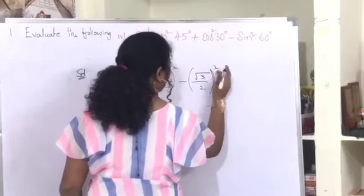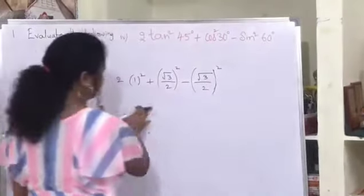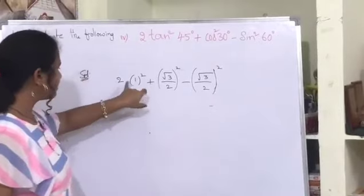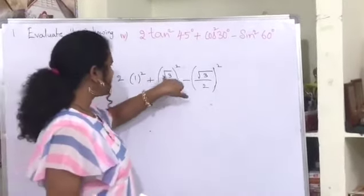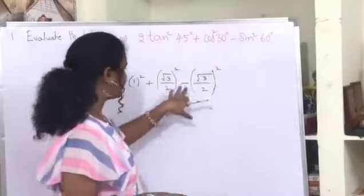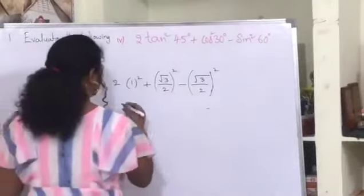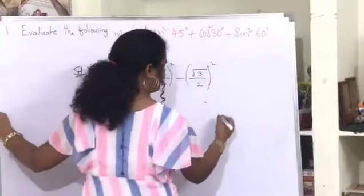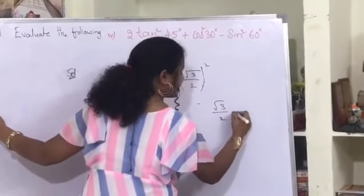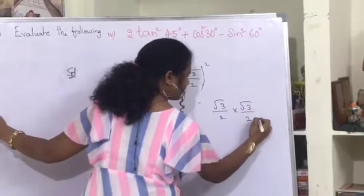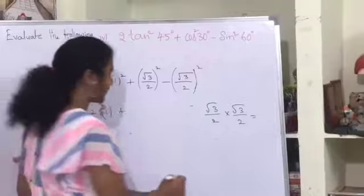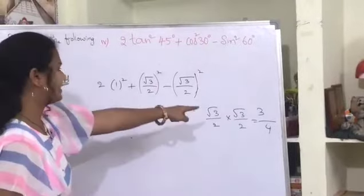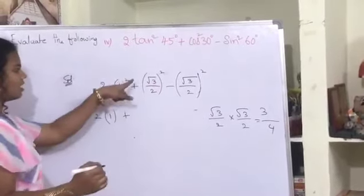Simplifying: 2 times 1 squared equals 2, plus root 3 by 2 whole squared. Now root 3 by 2 into root 3 by 2 gives: root 3 times root 3 equals 3, and 2 times 2 equals 4, so root 3 by 2 whole squared gives 3 by 4.